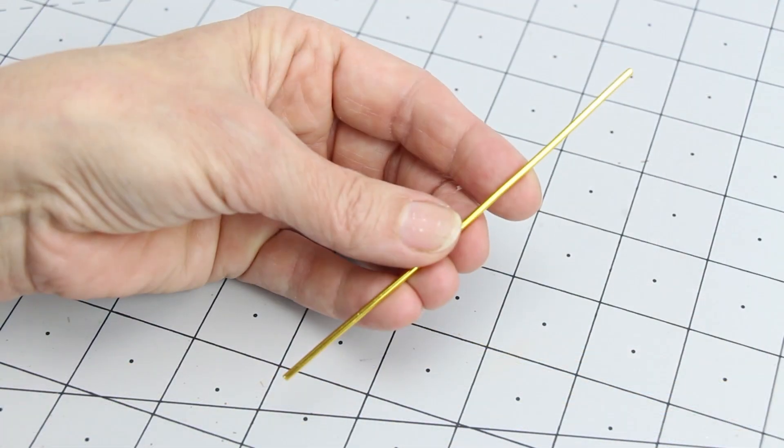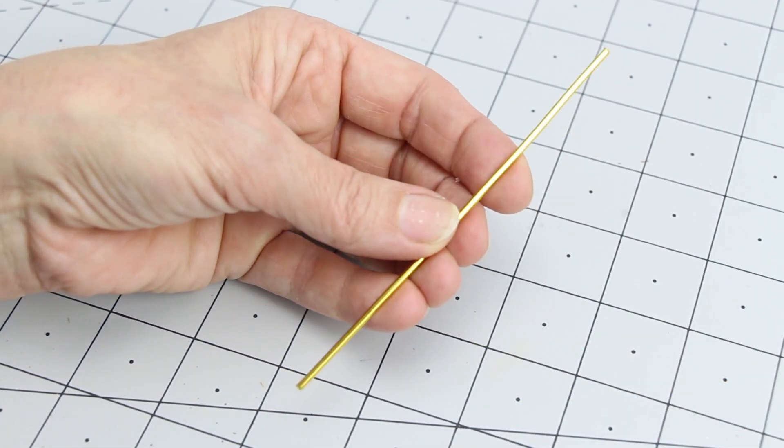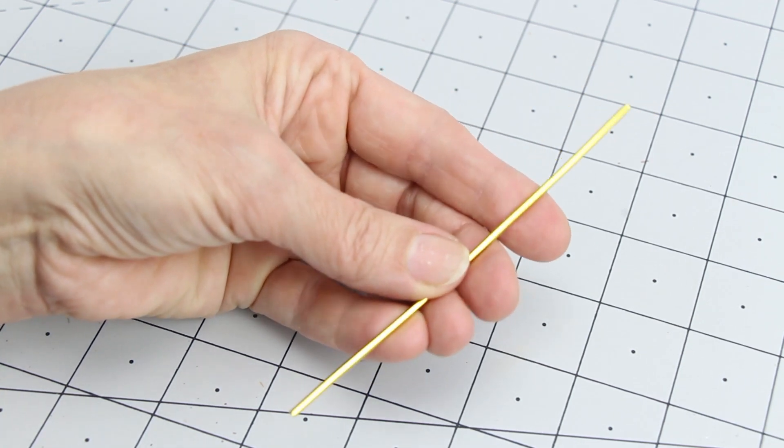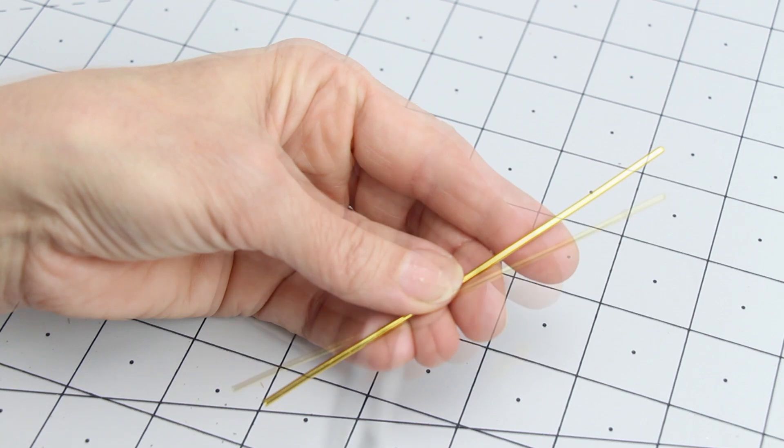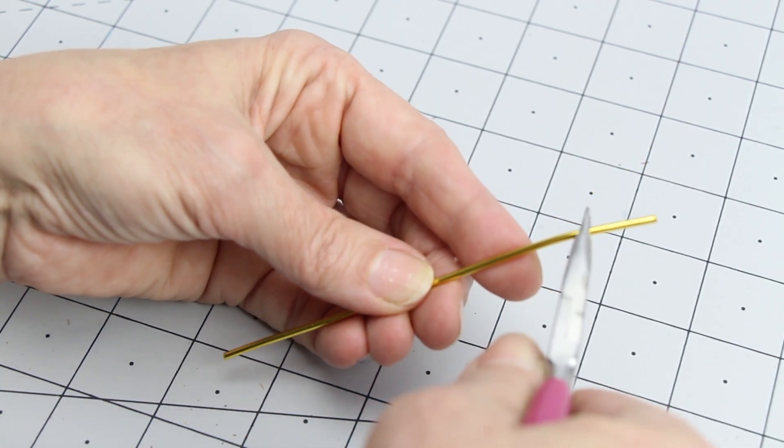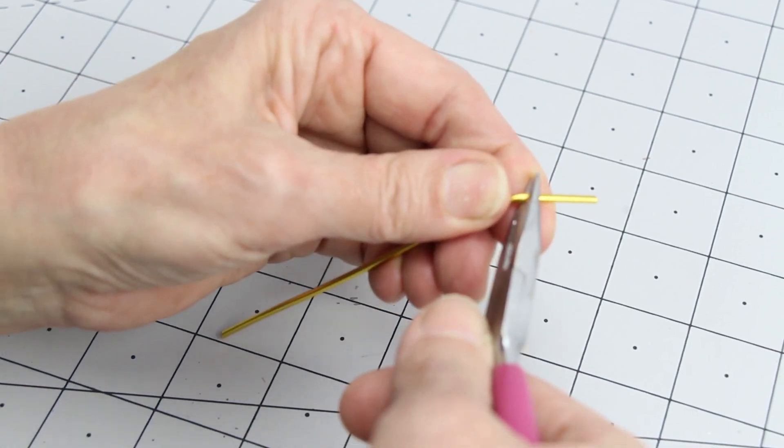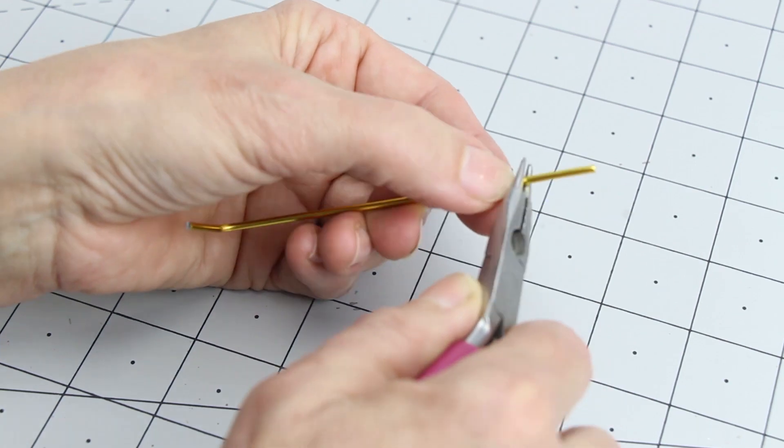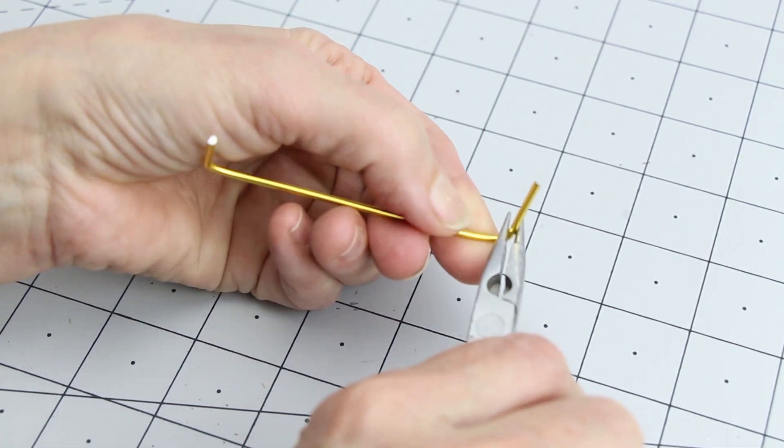Now let's make the curtains. I found this gold wire in the floral section of the dollar store and I thought it would work great for the curtain rods. Cut two six-inch pieces. Position your pliers three-fourths of an inch from the edge and bend. Do the same to the other side.